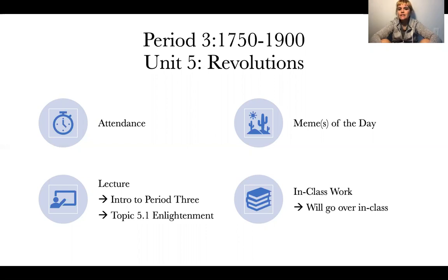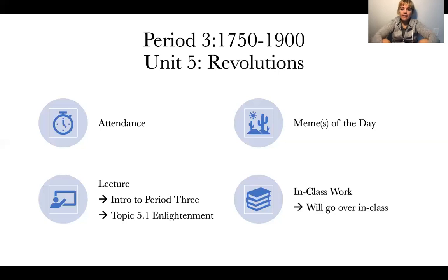Period 3 is really, really important and we're going to go into more detail than we did in Periods 1 and 2. We are setting up for how the world looks today in 2020. The best way to start is with Unit 5 — revolutions. Unlike Period 2, we will be going in order for Period 3, starting with Unit 5, then Unit 6, which covers the consequences of industrialization. Unit 6 is probably my favorite unit in all of AP World History.